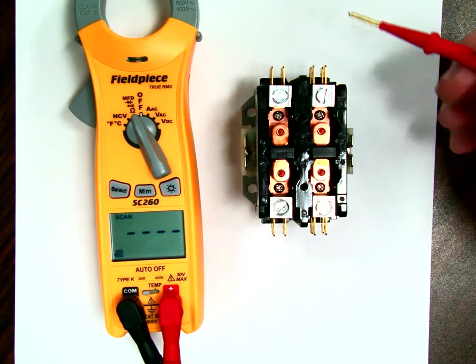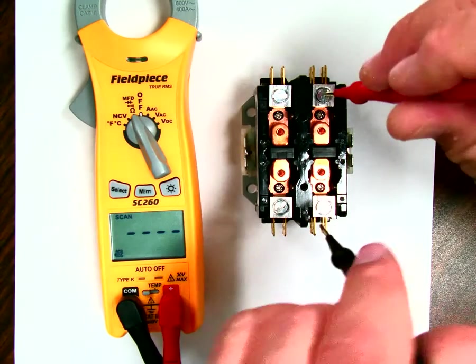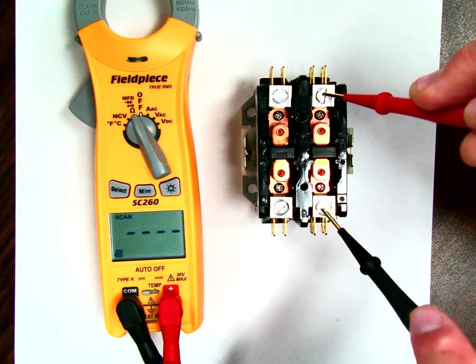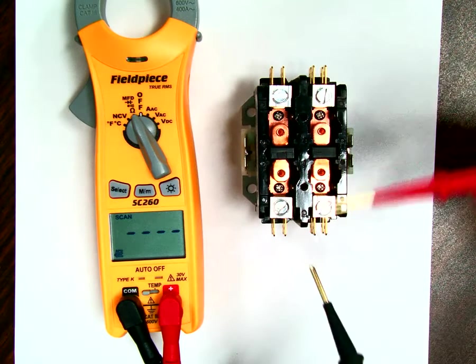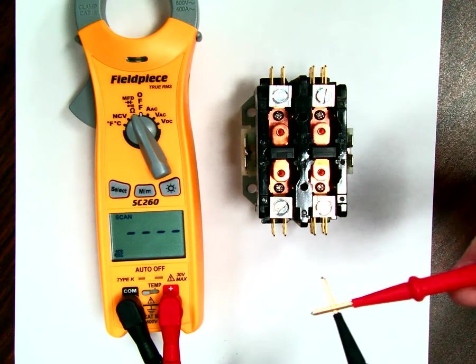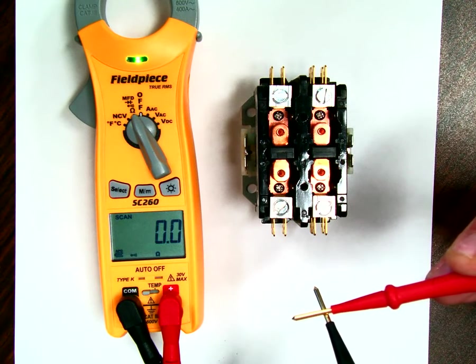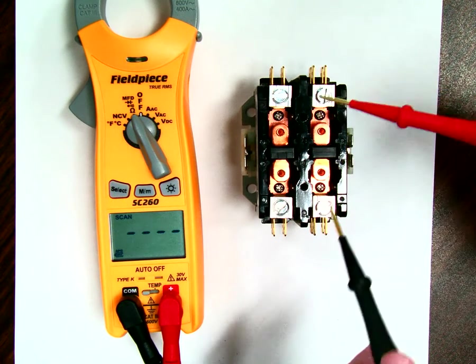If I was to touch from here to here, there's no connection. You notice the readings? There's nothing, it's staying dashed. But if there was a connection and I did this, it would do this. But it's not.